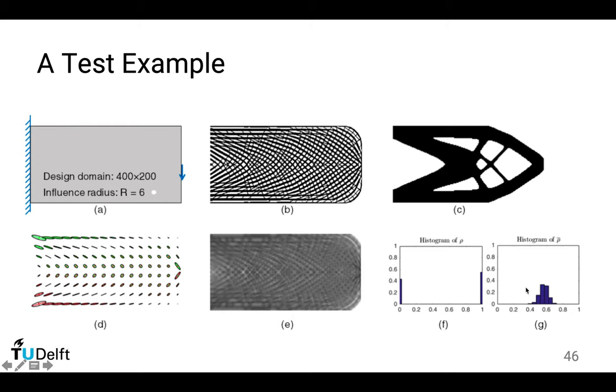This is the histogram of the local volume fraction. So most of them are below 0.6. This is the constraint. It is satisfied. And a few of them are larger than 0.6. This is because we satisfy this constraint in an approximate manner. So there are still some elements which don't fully satisfy this constraint. If you look into the papers, it is very well explained. But I will skip this detail in this lecture.